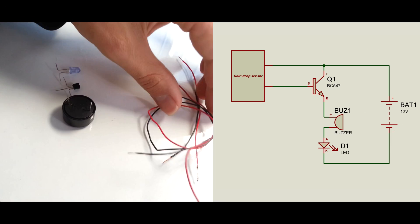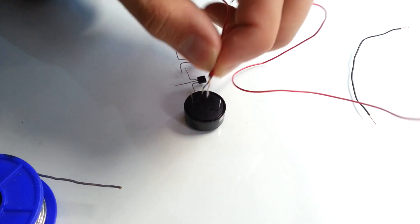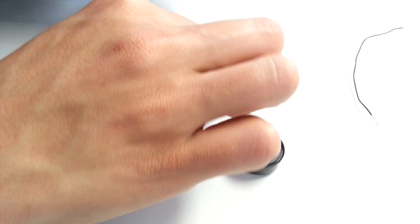On the right you can see the schematic, and let's start soldering. First I'm going to solder two red wires to the collector lead of the transistor BC547.